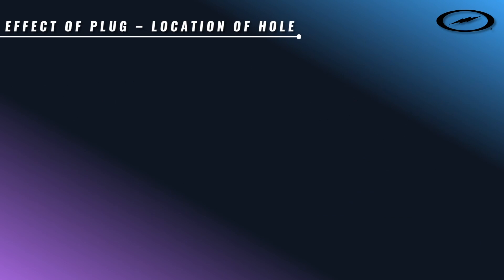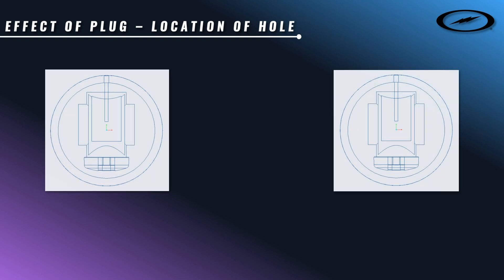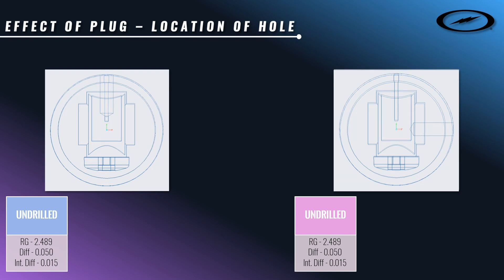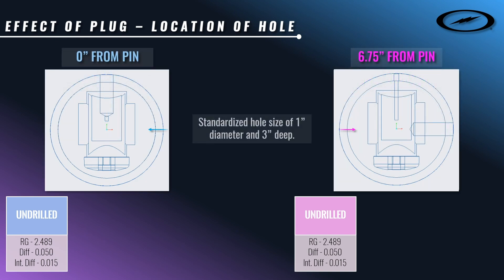First up, we have the location of the hole. We're going to have our simulations here through our engineering software. Undrilled, these are going to be numbers you'll be familiar with by the end of this section: 2.489 for the RG, 50 total differential, and 15 intermediate differential.